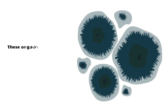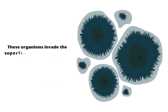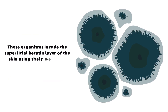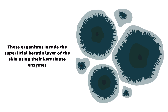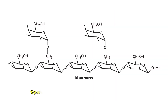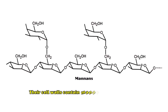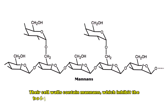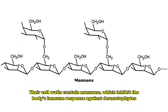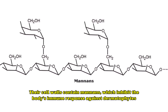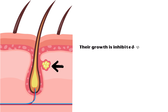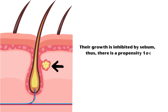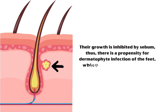These organisms invade the superficial keratin layer of the skin using their keratinase enzymes. Their cell walls contain mannans, which inhibit the body's immune response against dermatophytes. Their growth is inhibited by sebum. Thus, there is a propensity for dermatophyte infection of the feet, which have no sebaceous glands.